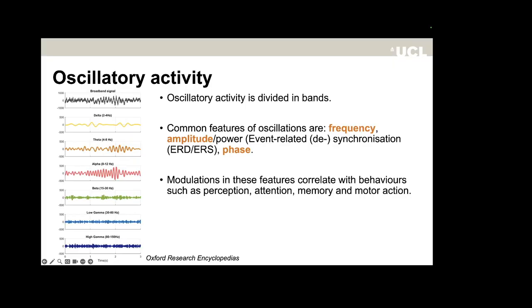Another prominent electrophysiological signature is oscillatory activity. Neural oscillations are defined as frequency-specific patterns of neural activity that can occur spontaneously—such as sensorimotor mu or alpha rhythms—or be induced, such as a steady-state visual evoked potential. Modulations of frequency, amplitude, phase, and power correlate with behavior such as perception, attention, memory, and motor action. Disease-specific differences in oscillatory properties have been found and suggested as biomarkers for Parkinson's disease, autism, and schizophrenia.